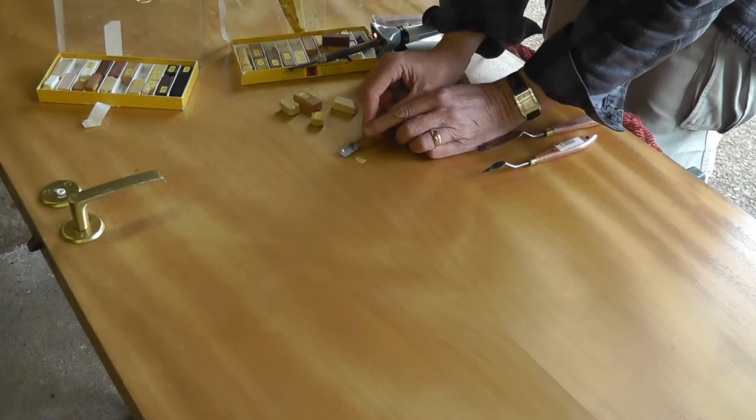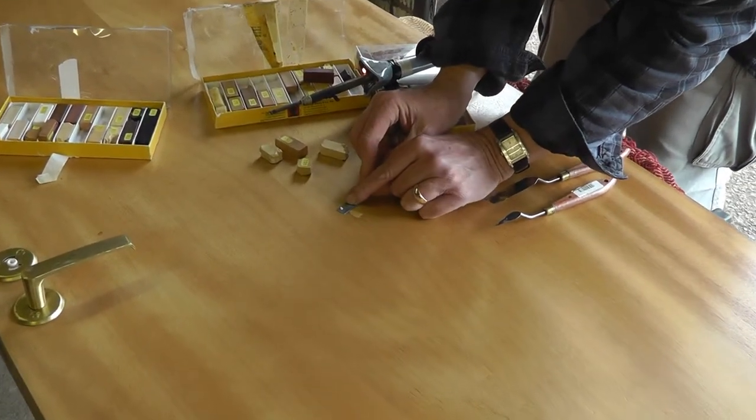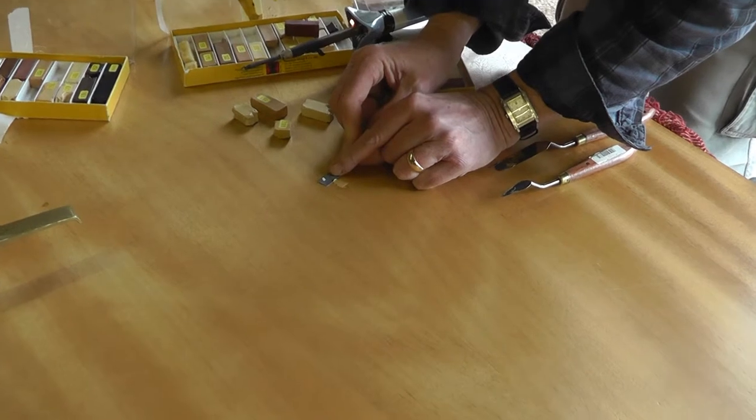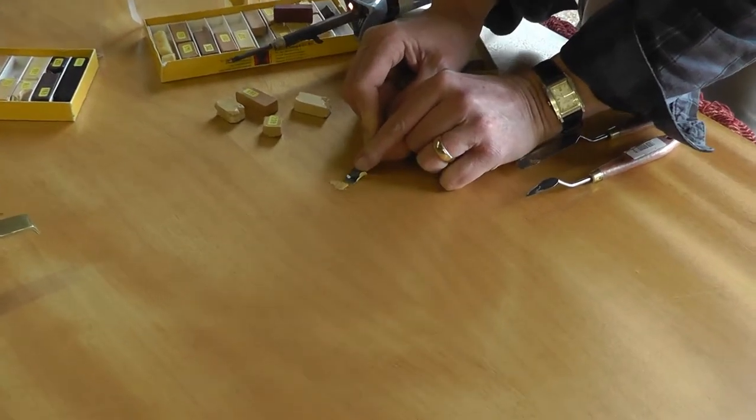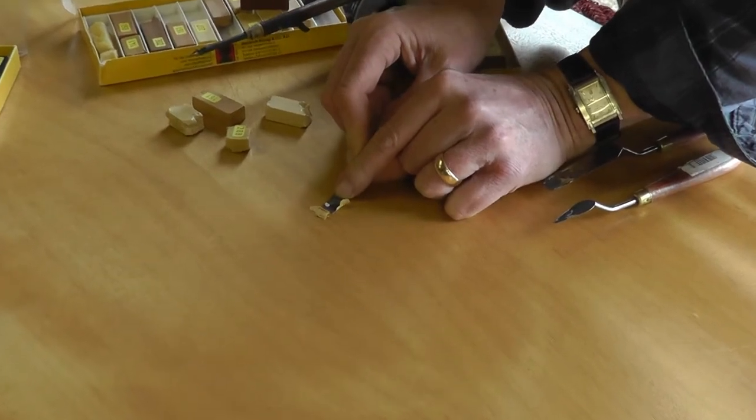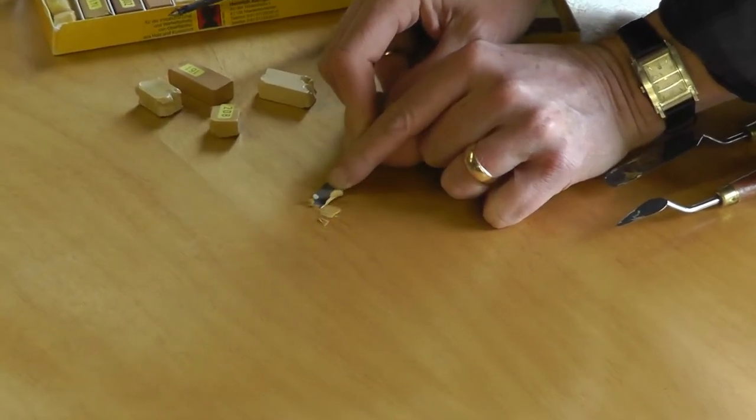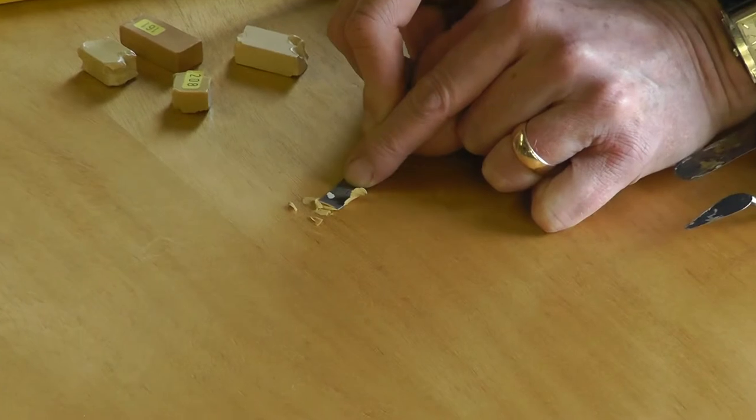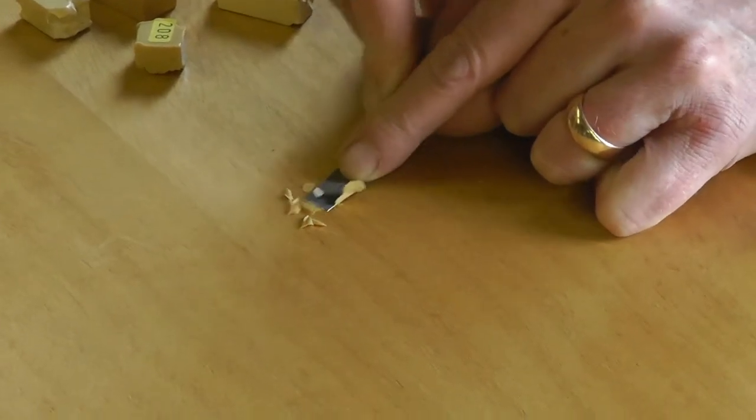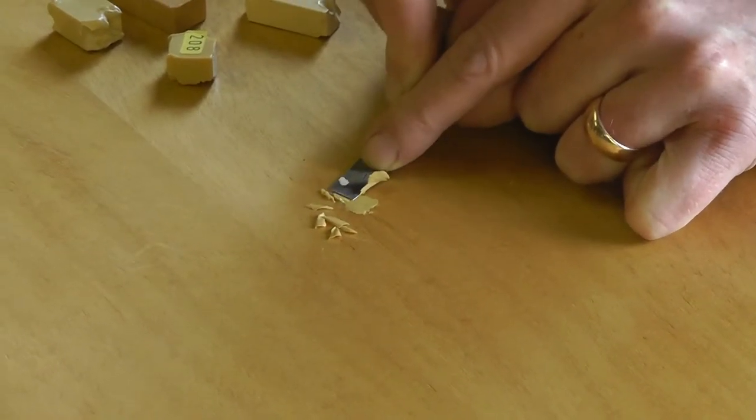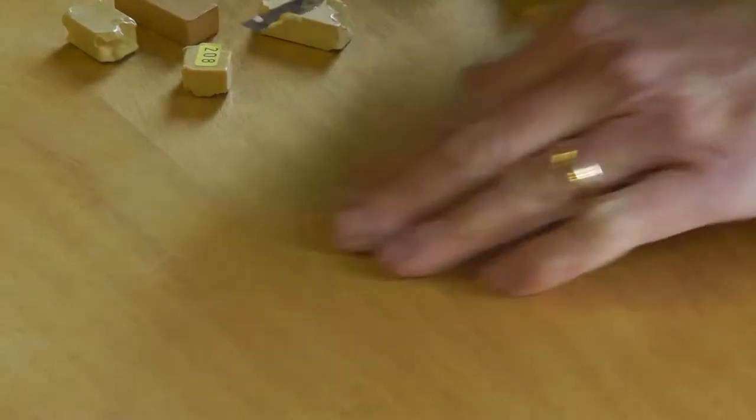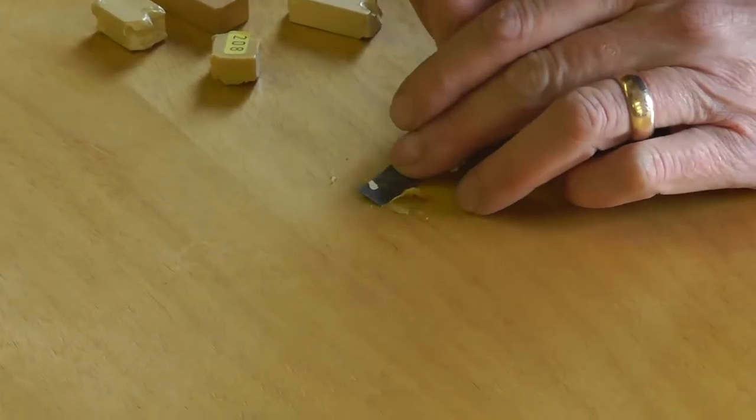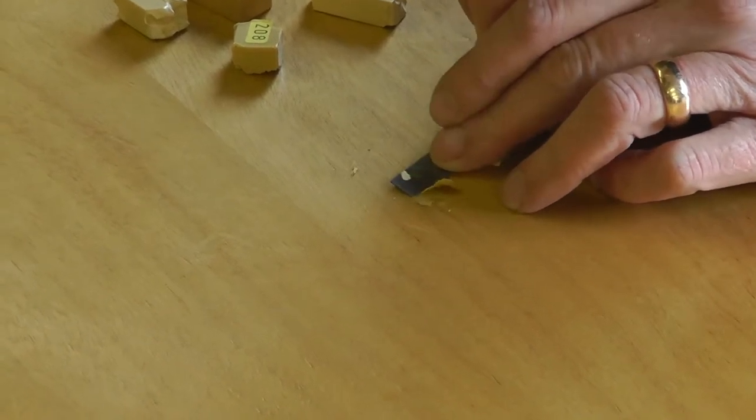We filled the indentation with wax, let it set, and now we are taking away the surplus wax carefully so as not to scratch. Then we're going to melt some more.